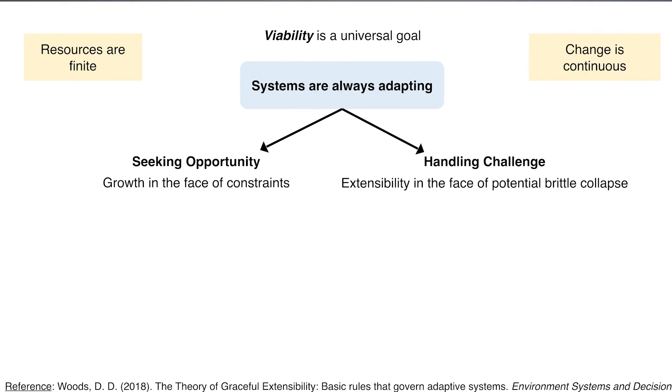Where do those constraints come from? The two basic ones that govern this universe and the space in which human systems operate are: first, that resources are finite. Resources are always finite. We may try to relax that under some conditions and say we don't have to worry about it for the moment, but that's an illusion. We always have to worry about finite resources because they have an impact that permeates the ways adaptive systems behave — the regularities, the laws, the patterns, and the fundamental theorems that always apply.